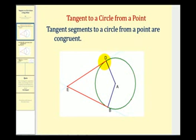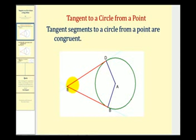In this diagram, notice that segment BE and segment DE share the endpoint E and are also tangent to the green circle. We want to prove these two red segments are congruent. We'll do that by first constructing segment AE and then prove that these two smaller triangles are congruent, and therefore corresponding parts are also congruent.